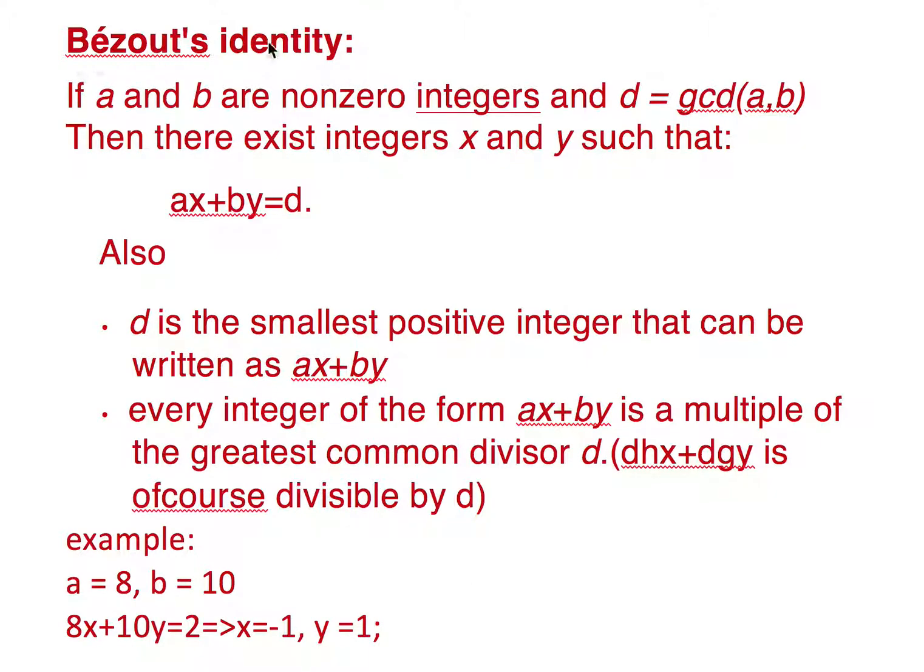Friends, so today we'll quickly look at Bézout's identity. It states that if a and b are non-zero integers and d is equal to gcd of a and b, that is the highest common factor of a and b, then there exist integers x and y such that ax plus by is equal to d.